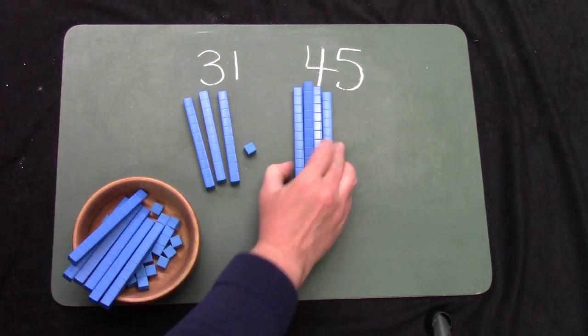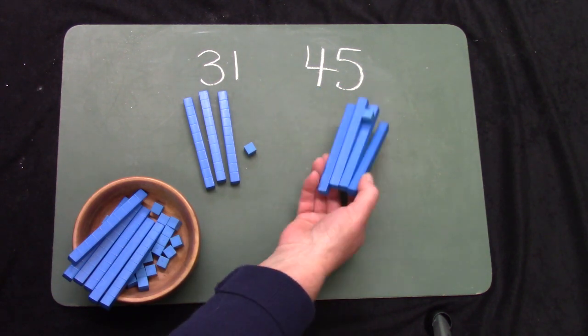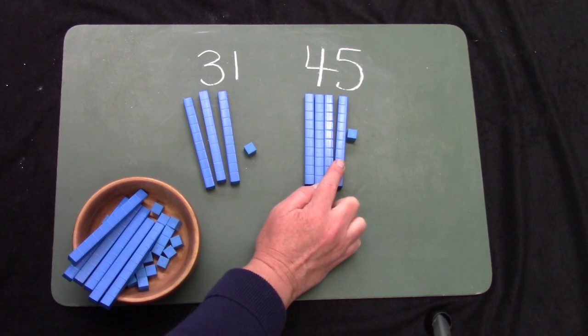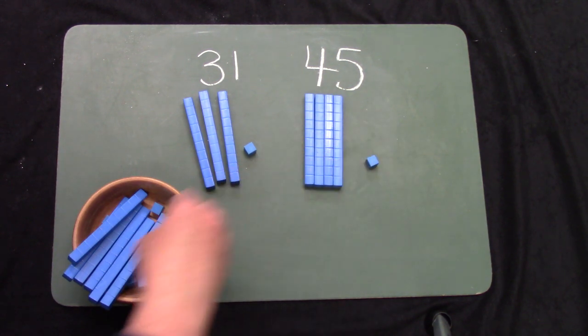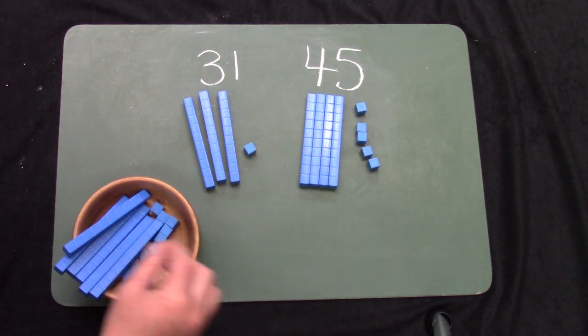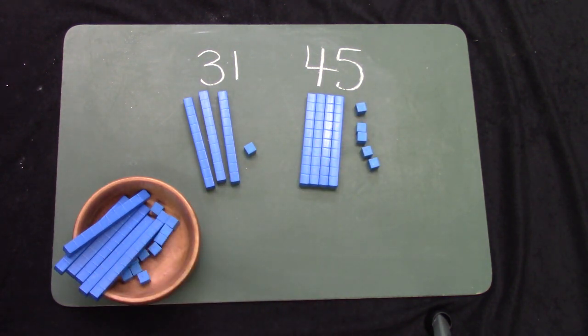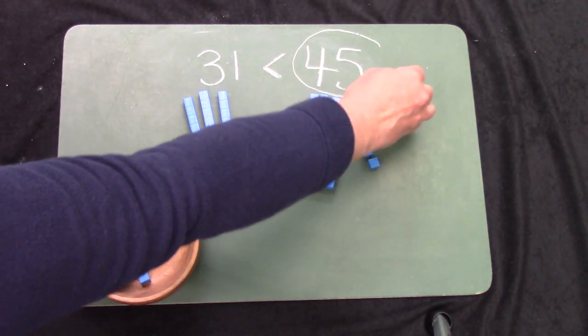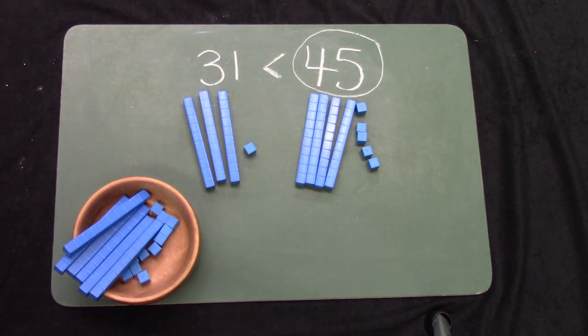For 45, we would need, oh, I have a little one stack there. I would need 1, 2, 3, 4 groups of 10, and then 5. Which number is greater? 45 is greater. I'm in a circle. 45.